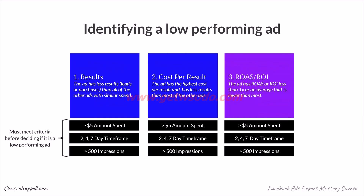Identifying a low performing ad: first, check results. If the ad has fewer results in terms of leads or purchases than all other ads with a similar amount spent, that's an indicator it's not performing well. Second, check cost per result. If an ad has the highest cost per result and fewer results than most other ads — say, extremely high cost while all your other ads have super low cost and more results — then that ad is also considered a low performer.